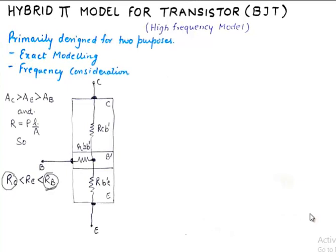The hybrid pi model has a lot to do with the physical construction of the transistor. We know that transistor has three layers out of which collector has the largest area followed by emitter and the base has the smallest area. If we look at the formula for resistance which is rho L upon A, the dependency of the resistance on area reveals that the resistance of the collector will be the lowest and the resistance of the base will be the highest.